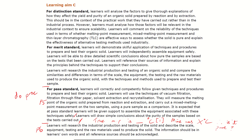Now P6 — again, getting on Google, same four things to look up: scale, equipment, testing, and raw materials required.